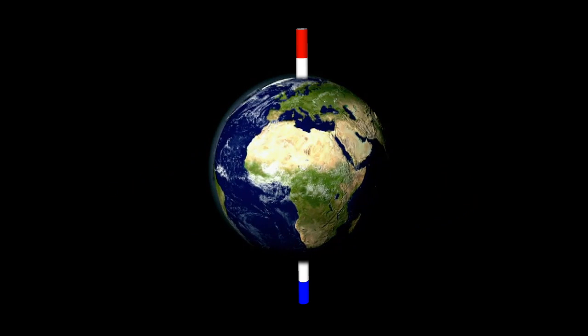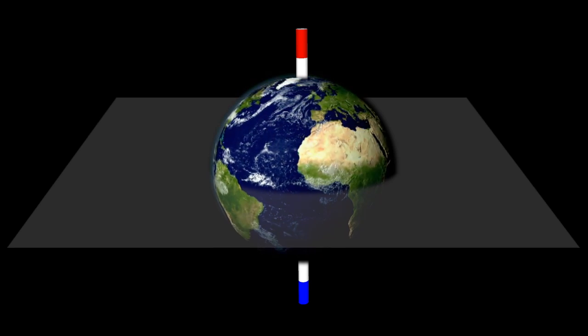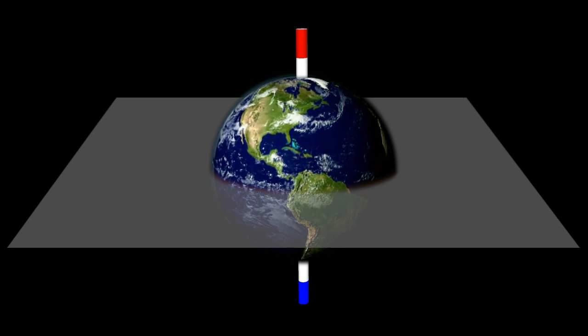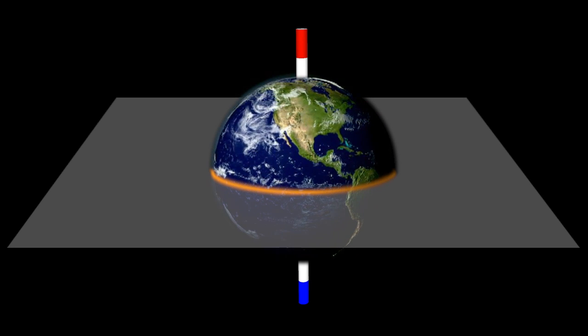These celestial poles are an infinite imaginary extension of Earth's poles. The plane of Earth's equator, extended to infinity, marks the celestial equator.